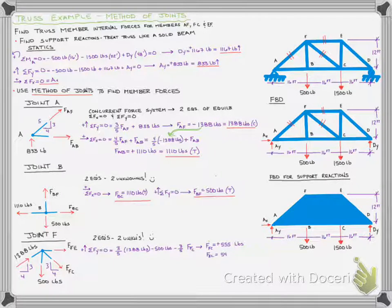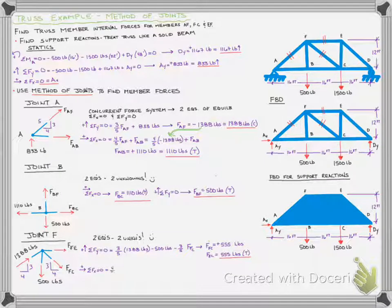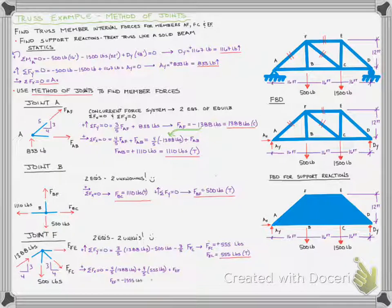Then we can continue our statics and sum our forces in the X direction. When we sum forces in the X, we're going to get that we have positive 1,388 pounds, four-fifths of that. We're going to have four-fifths of our force FC, also positive. And then we have plus force FE. It means force FE is going to have to be negative, which means force FE is 1,555 pounds in compression. So we have now found all of our member forces.